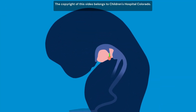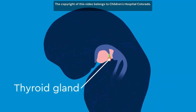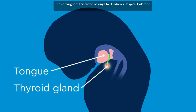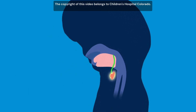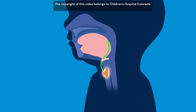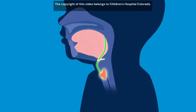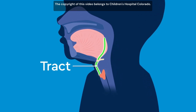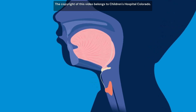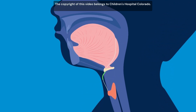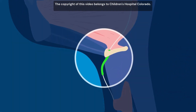During fetal development, the thyroid gland travels down the neck from the back of the tongue, forming an open path called a tract. This tract closes during development but can remain open in some children. A pocket of fluid can grow if the tract stays open — this is the cyst.